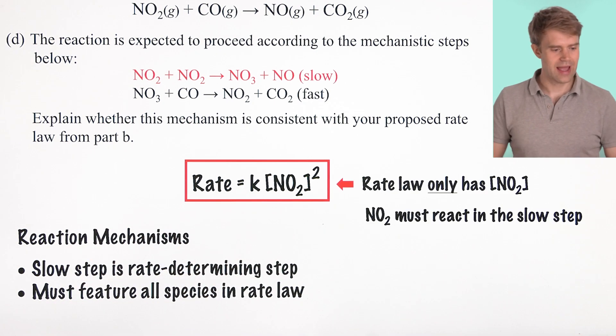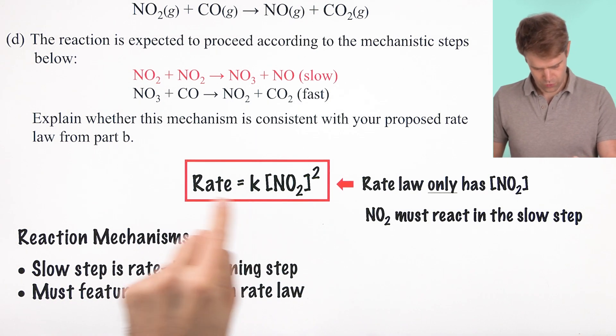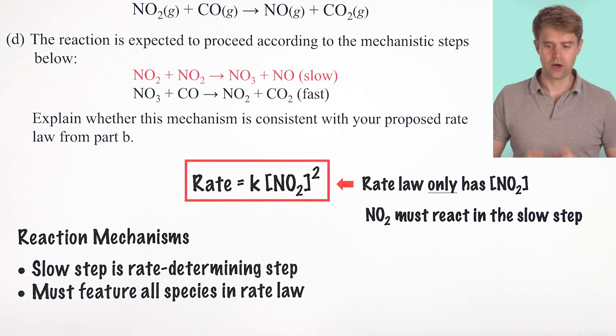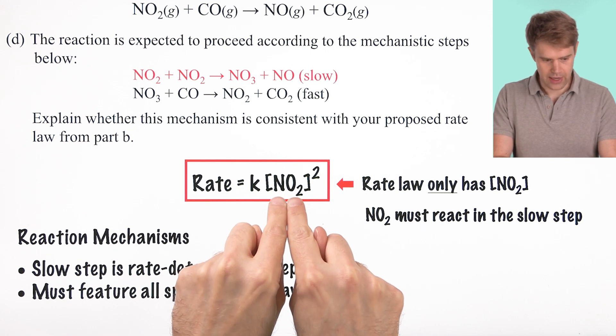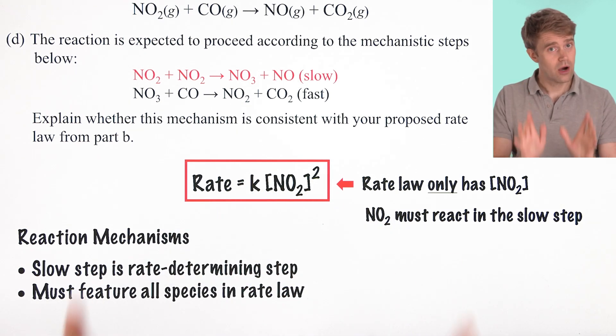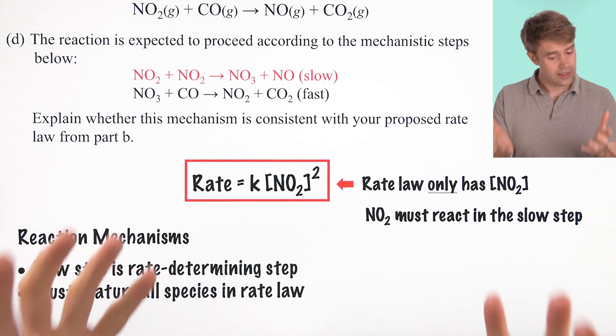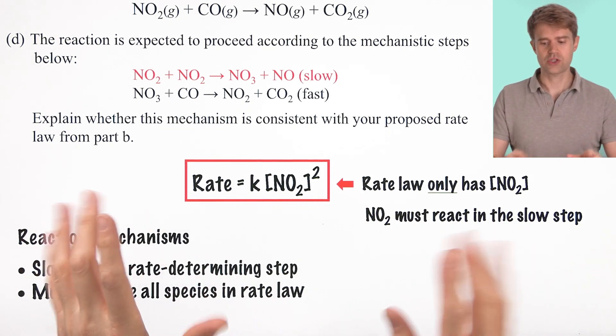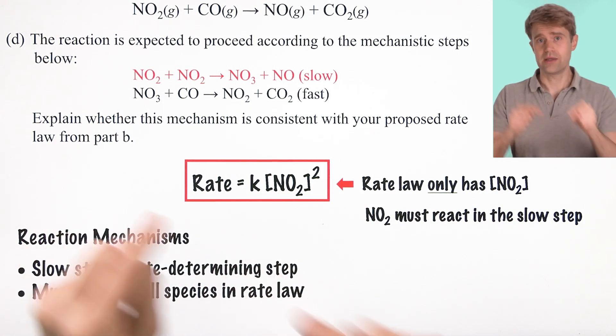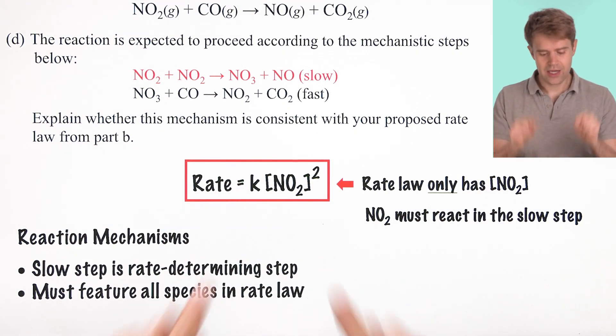Now, this rate determining step, this slow step, must feature all the species in the rate law. So all the chemicals, all the reactants. For example, for rate equals K [NO2] squared here, the rate determining step has to include nitrogen dioxide. And if we know that the reaction order is zero with respect to CO, it's unlikely that carbon monoxide would be a reactant in the critical step. Because zero order means that concentration has no effect on the rate at all. So if it's zero order, it's not going to be involved with a critical rate determining step.